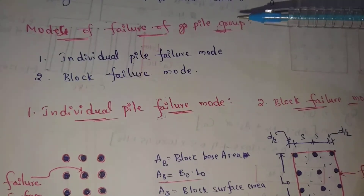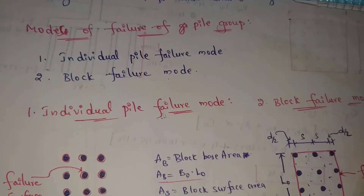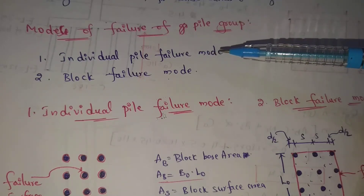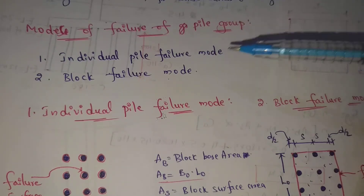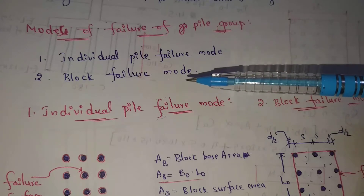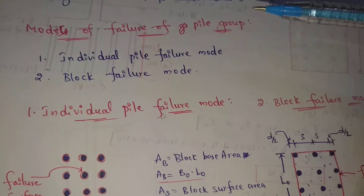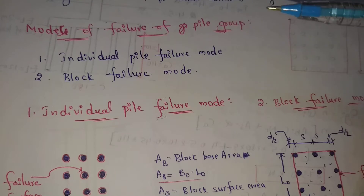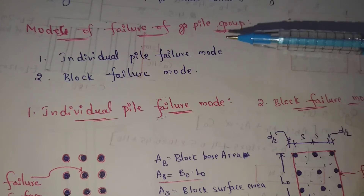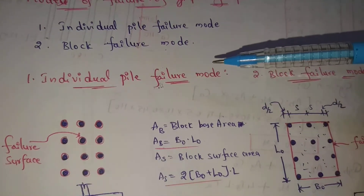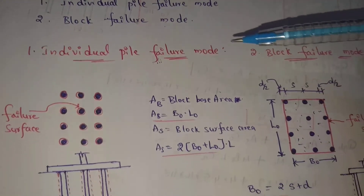Next topic: modes of failure of pile group. There are two modes of failure. The first one is individual pile failure mode. The second one is block pile failure mode.